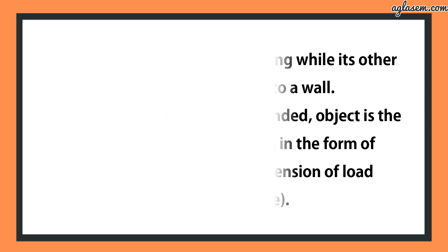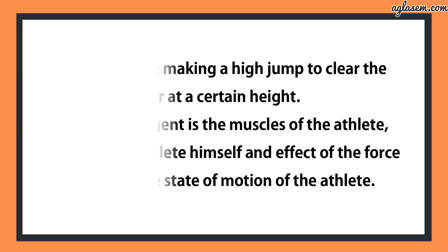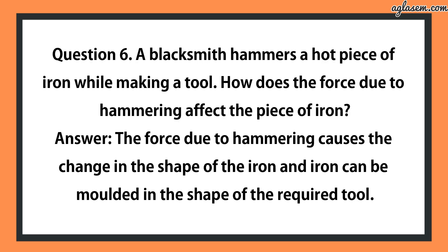Part D — an athlete making a high jump to clear a bar at a certain height: agent is the muscles of the athlete, object is the athlete himself, effect is a change in the state of motion of the athlete. Question number 6: A blacksmith hammers a hot piece of iron while making a tool. The force due to hammering causes a change in the shape of the iron, so it can be moulded into the required tool.